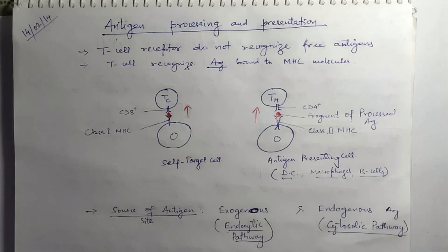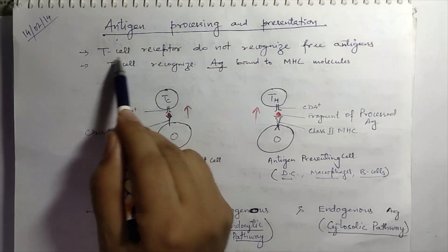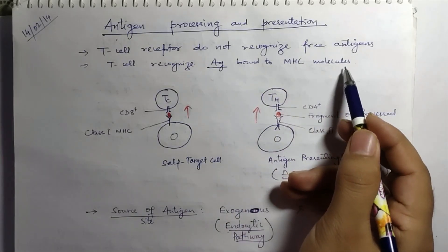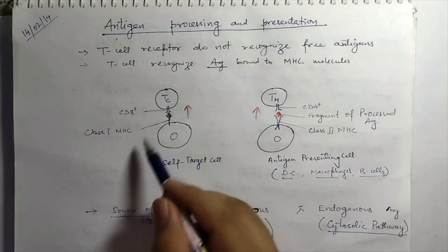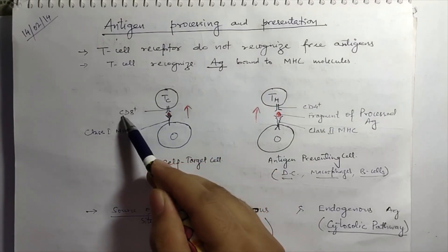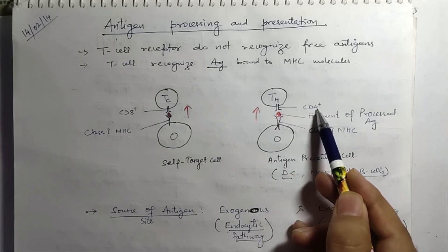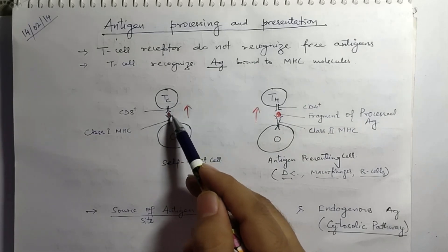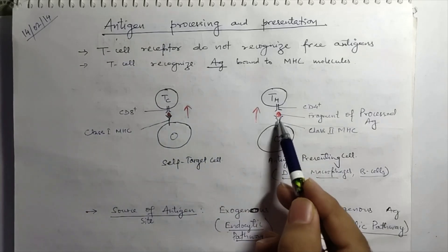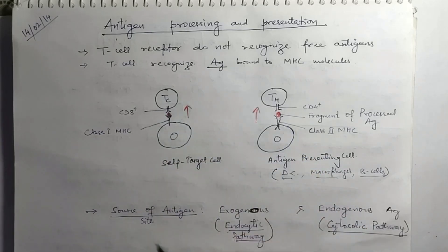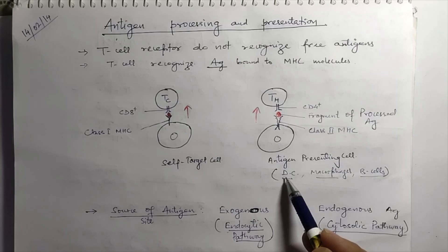T cytotoxic or T helper cells are unable to recognize antigens because these T cells lack T cell receptors and thus do not recognize free antigens. They recognize antigens which are bound to MHC molecules, presented by either antigen presenting cells or other self or target altered cells. From the diagram, T cytotoxic cells have receptor type CD8 positive, and T helper cells have receptor type CD4 positive. In between there is a red colored peptide — a processed antigen fragment presented by either class 1 or class 2 MHC molecules to CD receptors on T helper or T cytotoxic cells.